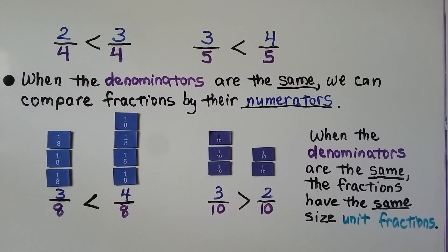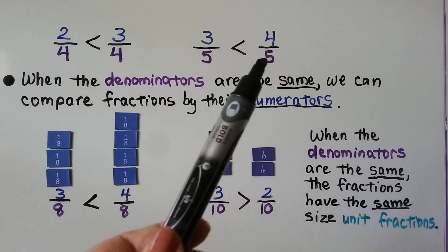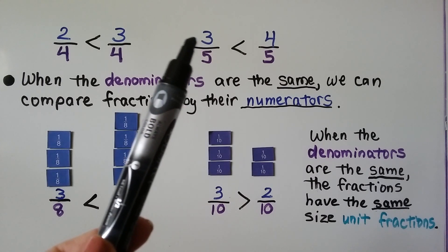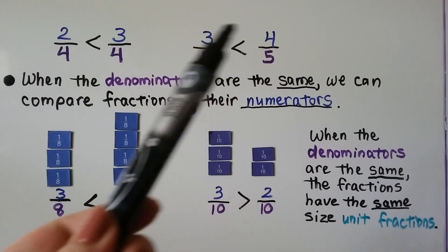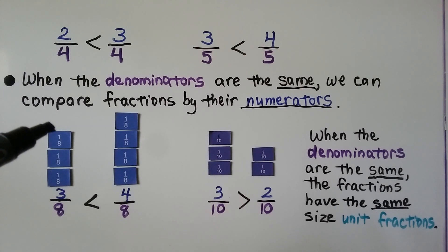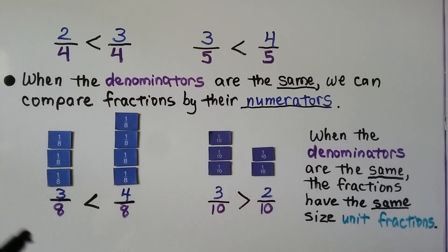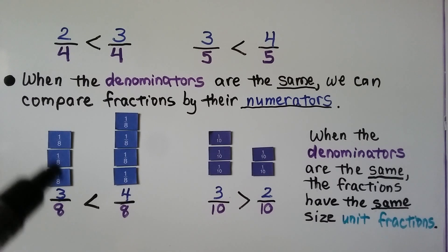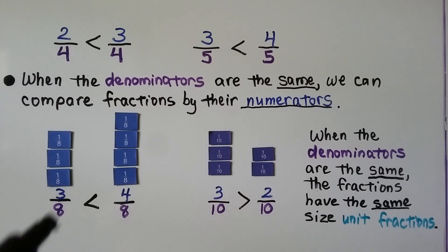Two-fourths is less than three-fourths. Here, both fractions have a denominator of five, so we can use the numerator to compare them. Three is less than four, so three-fifths is less than four-fifths. So when the denominators are the same, the fractions have the same size unit fractions. A unit fraction has a one for a numerator. So here we have unit fractions one-eighth, one-eighth, and one-eighth — that's three-eighths. The denominators are the same, so we use the numerators to compare: three is less than four. We have three of them here and four of them there.